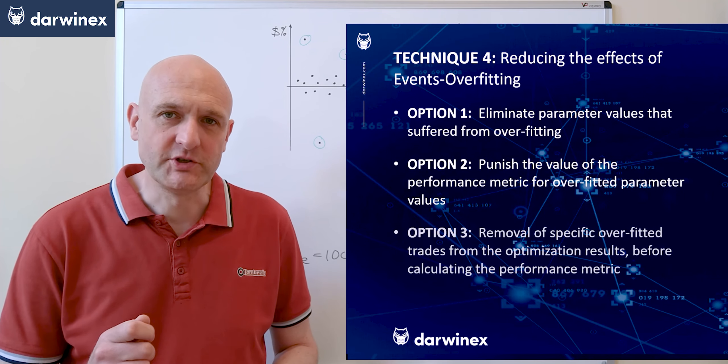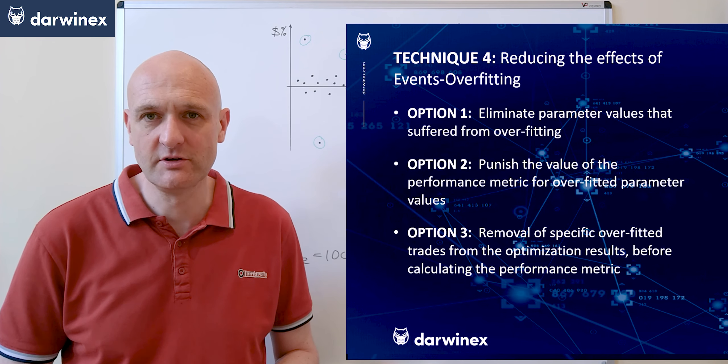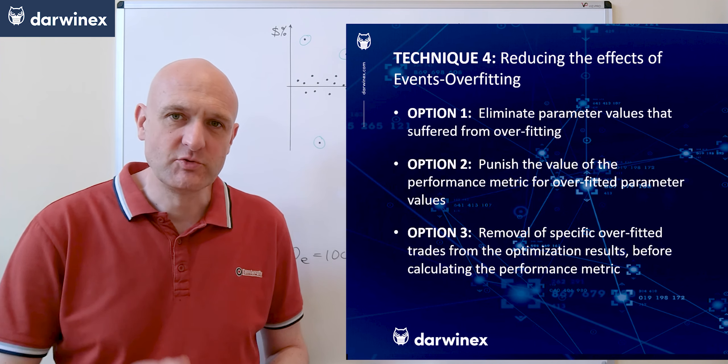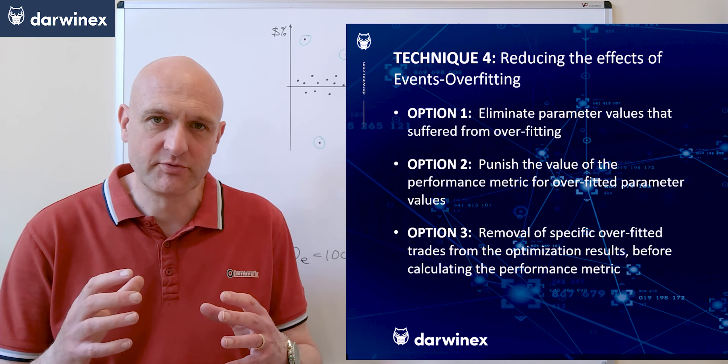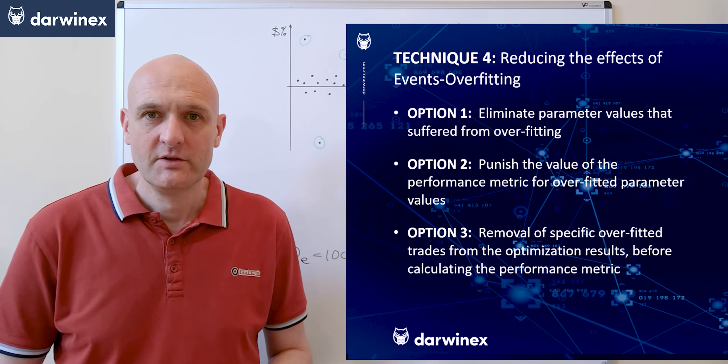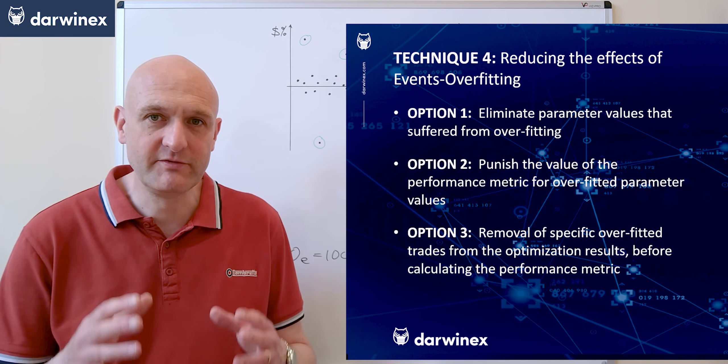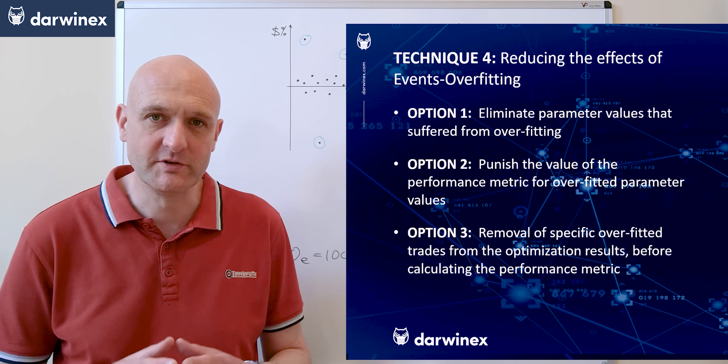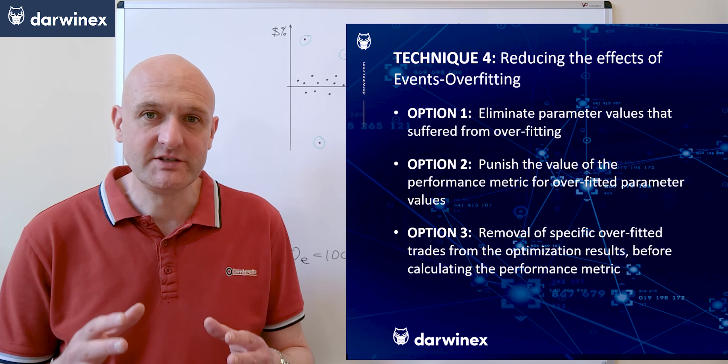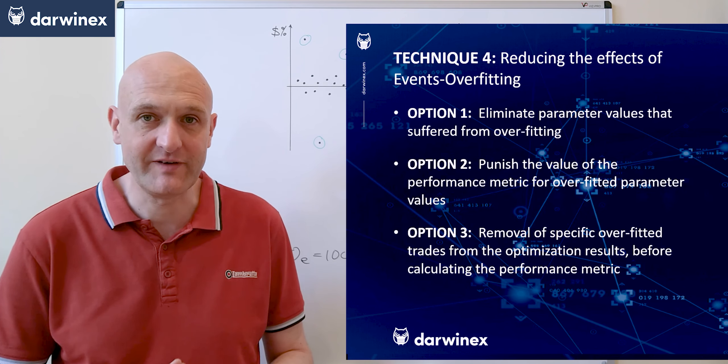With the third option we remove the specific overfitted trades from the optimization results before we calculate the performance metric. In this approach we do exactly the same as we did in the previous two and we code this in onTester. The difference here is that any specific overfitted trades get removed before the calculation of the performance metric is undertaken. So in our example the individual overfitted trades would not play a part in the calculation of the profit factor at all.